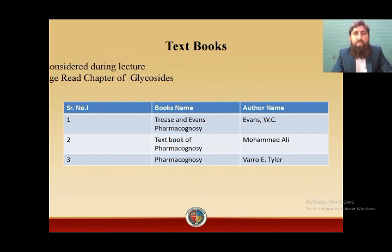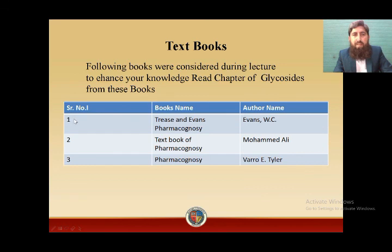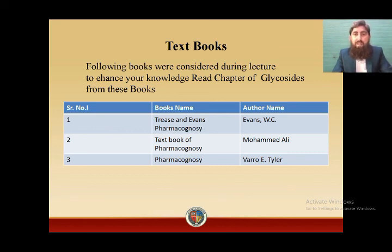Textbooks you must read while preparing for the exam: the following books were consulted during this lecture to enhance your knowledge, and I recommend you read the chapter on glycosides from these books too. Number one: Trease and Evans' Pharmacognosy, author W.C. Evans. Number two: Textbook of Pharmacognosy by Muhammad Ali. Number three: Pharmacognosy by Varro E. Tyler. You must buy these books or at least have soft copies or access them through the digital library.